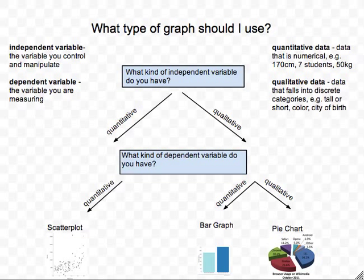Some other terms you need to know are the difference between quantitative and qualitative data. Quantitative data is data that can be represented as numbers. For example, if I'm measuring someone's height in centimeters, that's numerical, it's quantitative. If I'm measuring a number of students or somebody's mass in kilograms, that's all quantitative data.